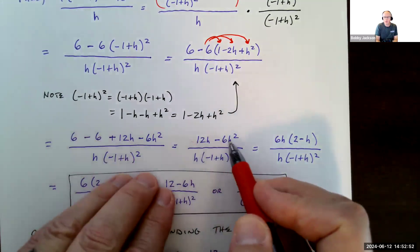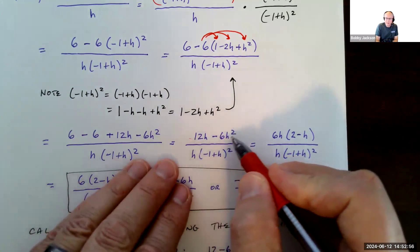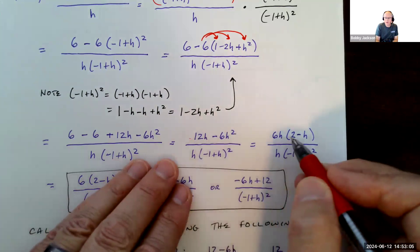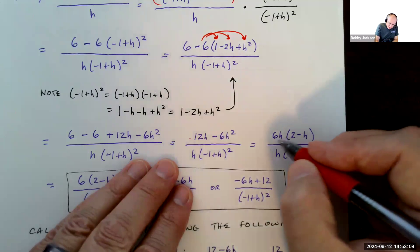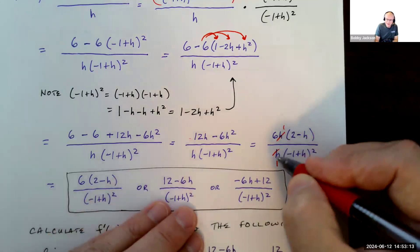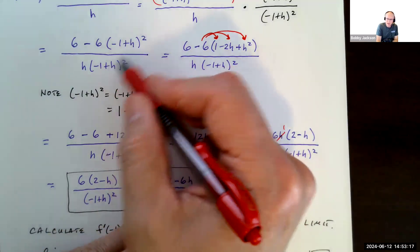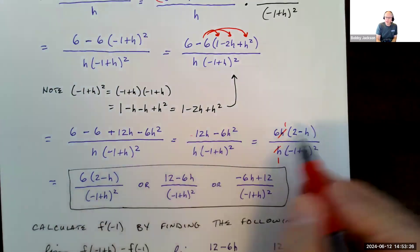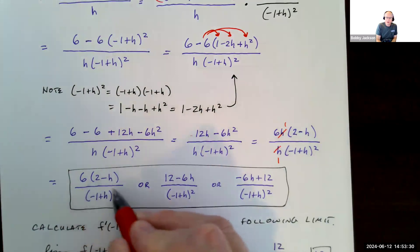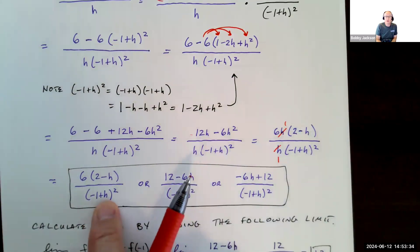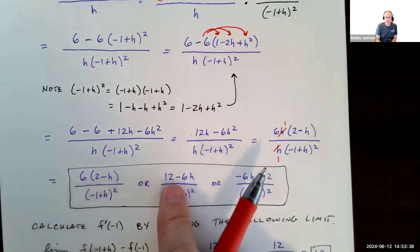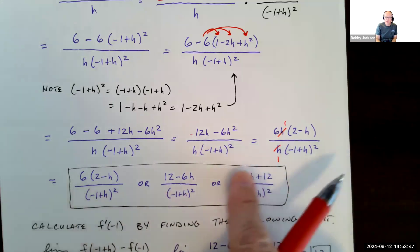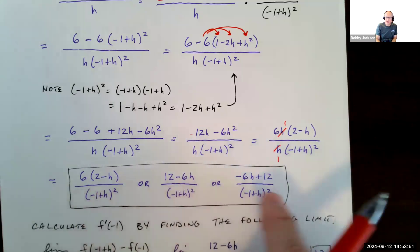6 minus 6 is 0. I'm just left with 12h minus 6h squared. Now, notice there is a greatest common factor for 12h minus 6h squared is 6h. Pulling a 6h out of 12h leaves 2. 6h out of that leaves h. And now I can divide top and bottom by this h because it's a factor. So your final answer is 6 times the quantity 2 minus h over this negative 1 plus h squared. You could also distribute the 6 through and get 12 minus 6h over this. Or notice 12 minus 6h is the same as negative 6h plus 12. Any of these three forms will be fine.